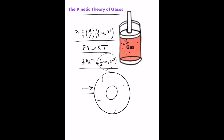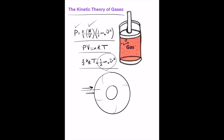For example, if we have a tire and pump more air into it, this will increase the number of molecules per unit volume, which will increase the pressure. If the temperature of the air inside the tire is increased, this will increase the average translational kinetic energy of the molecules, which will also increase the pressure.